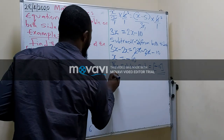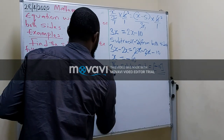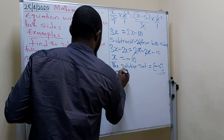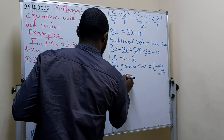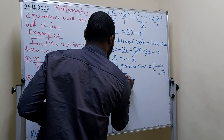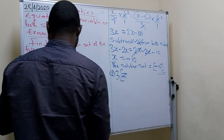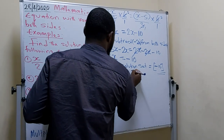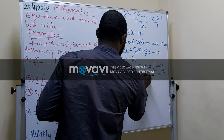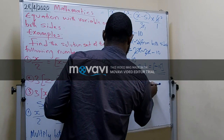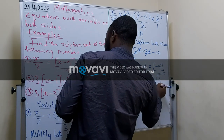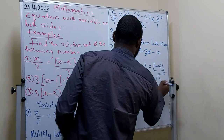Now we take the next question — number 2. We have 3 open bracket, z minus 1, close bracket, equals 2 open bracket, z plus 1, close bracket.